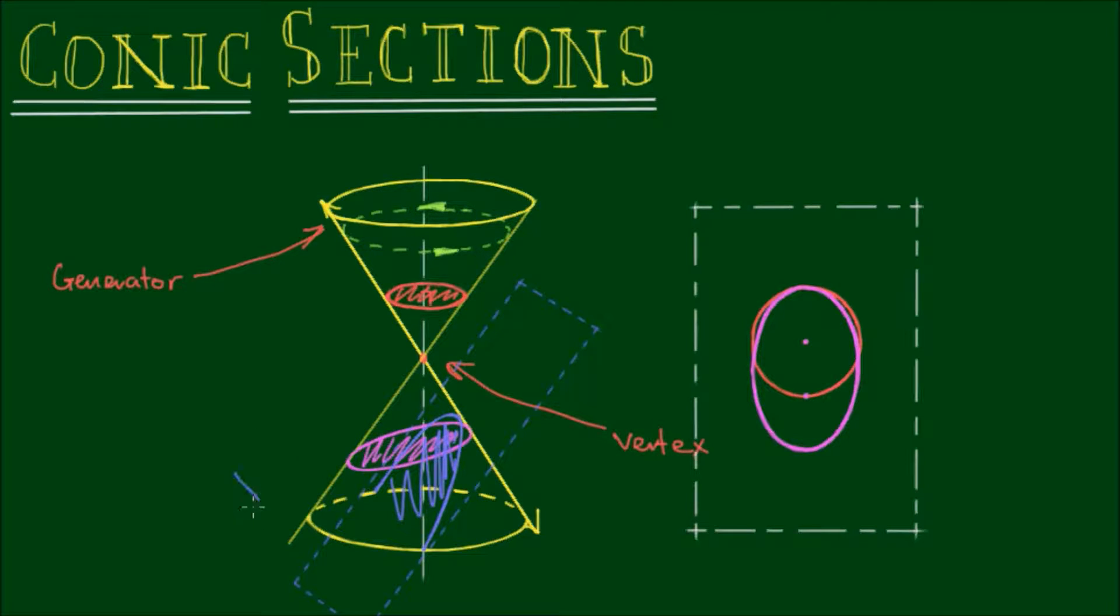And again, if we look perpendicularly at this plane, we will for sure see that the intersection curve is a parabola. And the parabola will go off to infinity.